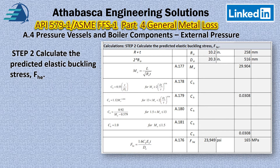Using Ch, we put it into the final equation with Ch in the numerator. We know our thickness and elastic modulus from the earlier slides, and we've determined Do. We then calculate the elastic buckling stress to be 23,949 psig or 165 megapascals.